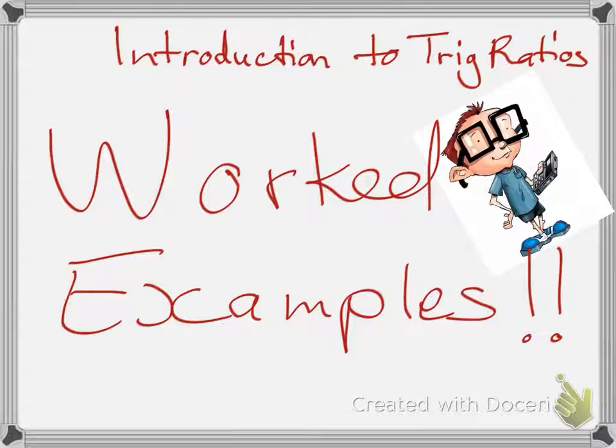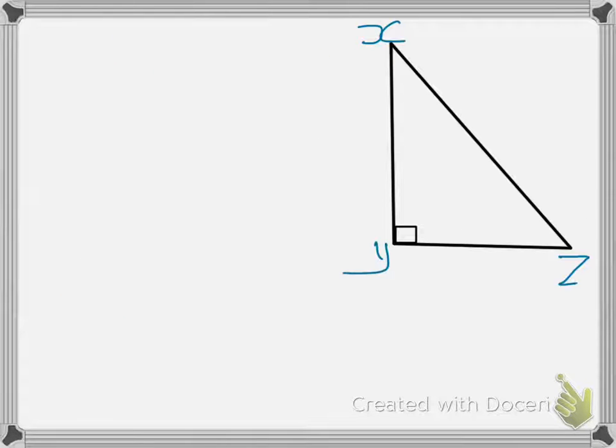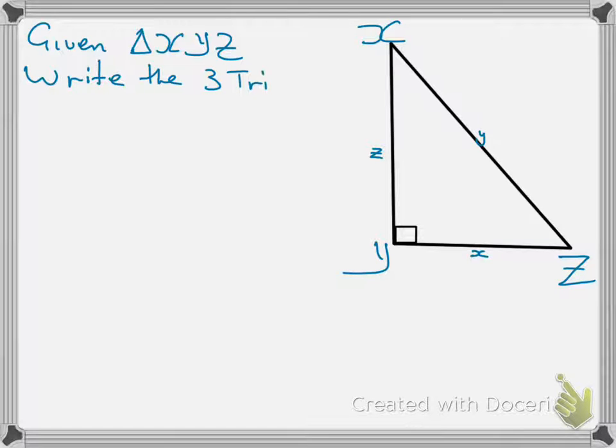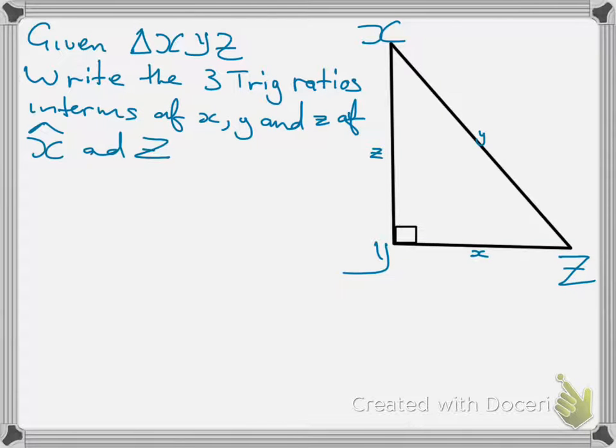So, we are looking at examples of trig ratios. You can be given a triangle X, Y, Z, and then they will ask you, given triangle XYZ, write the three trig ratios in terms of X, Y, and Z, the small sides of the angles X and angle Z.